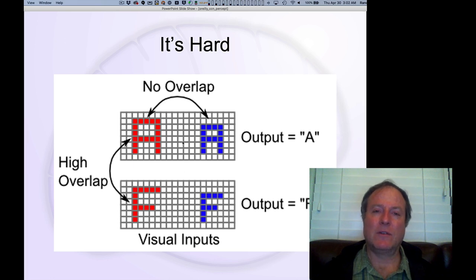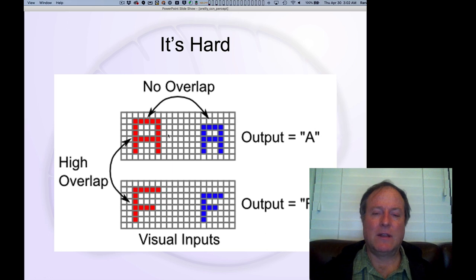The patterns of activity overlap in the visual inputs are exactly anti-aligned with the categories that we want to form at the high level. That really is the same thing as the XOR problem.